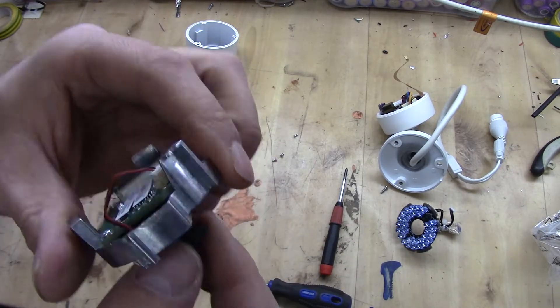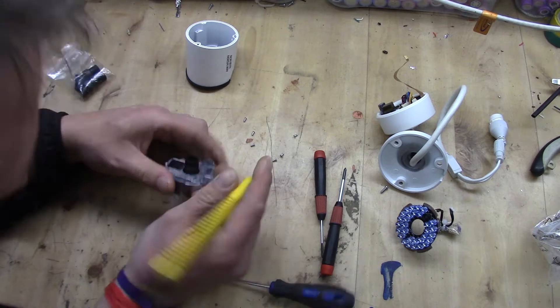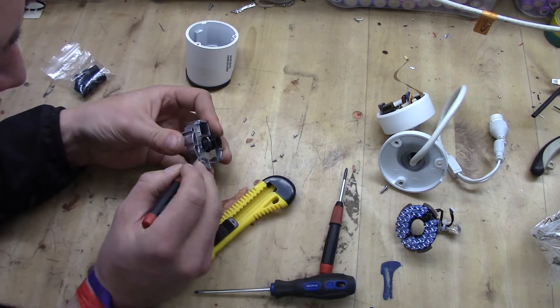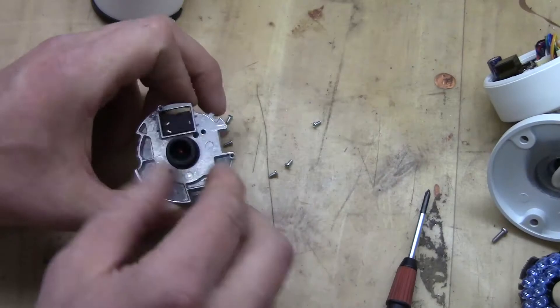On the lens itself there is actually some glue, so I'm just scraping that off a little bit. Nothing tricky here. Then it is just a matter of unscrewing the lens.